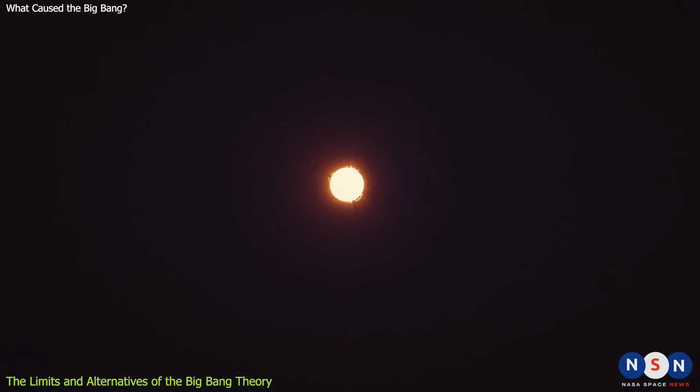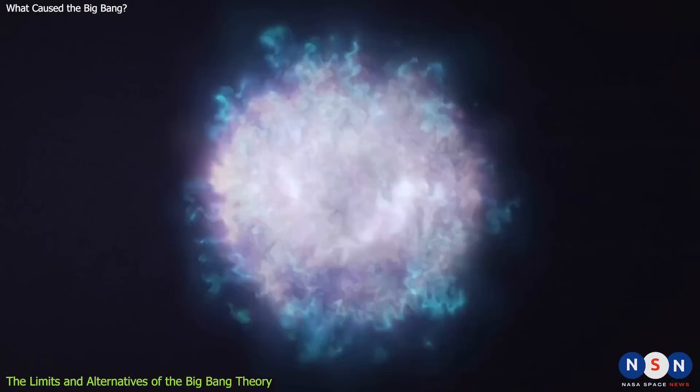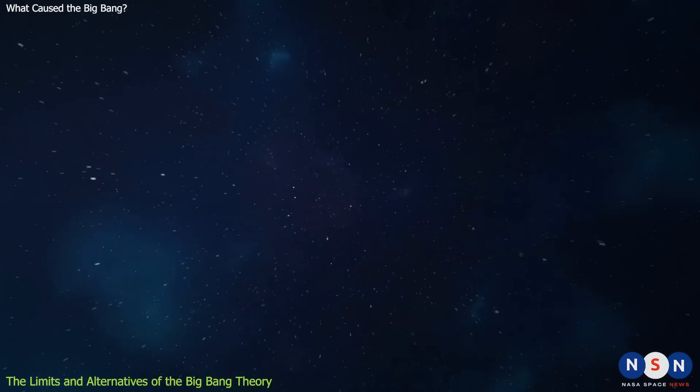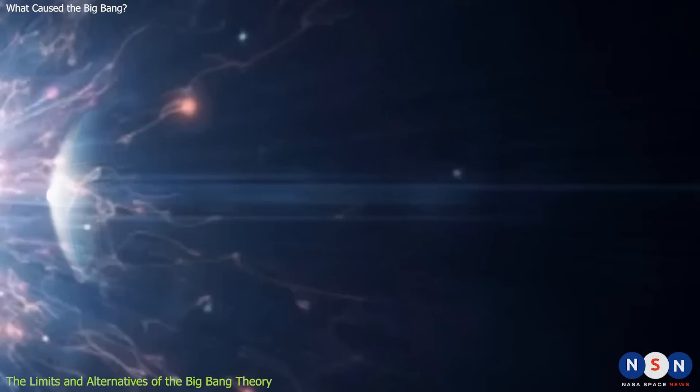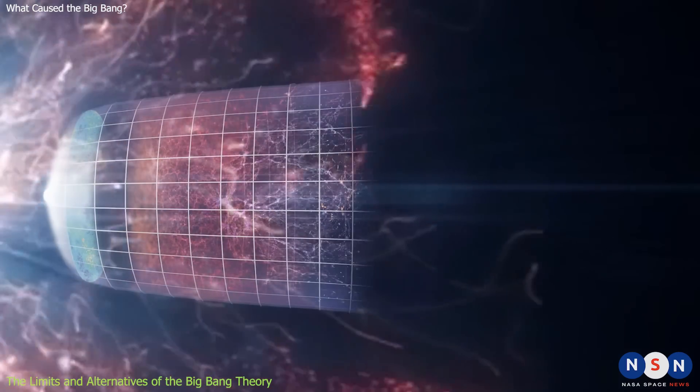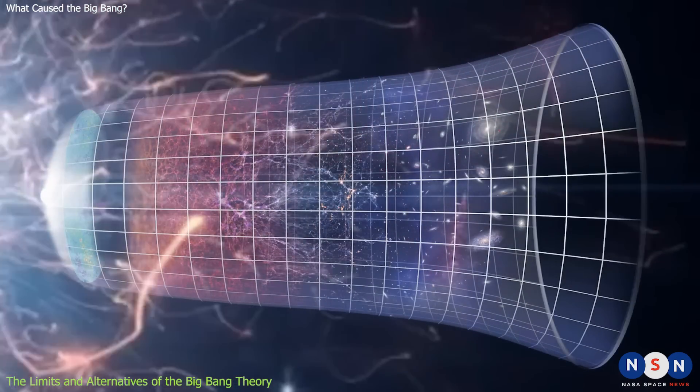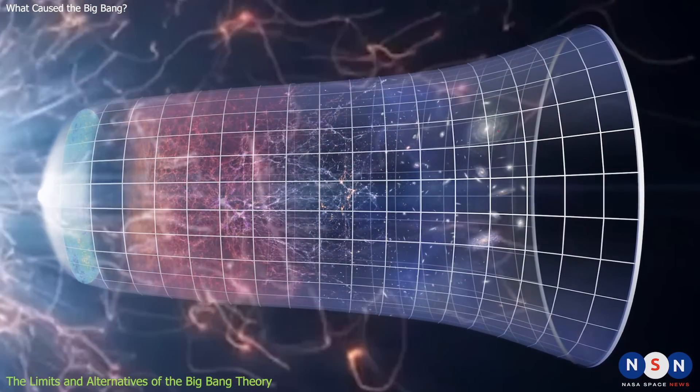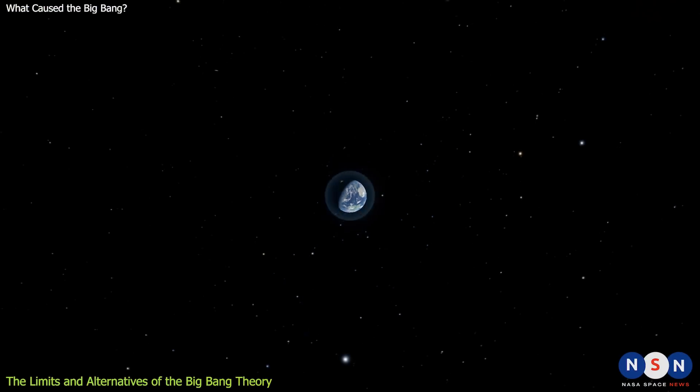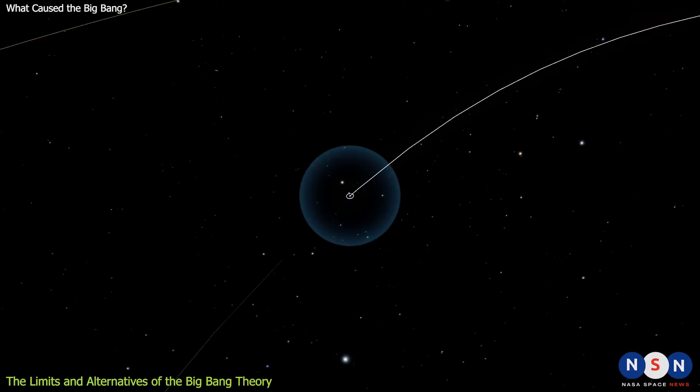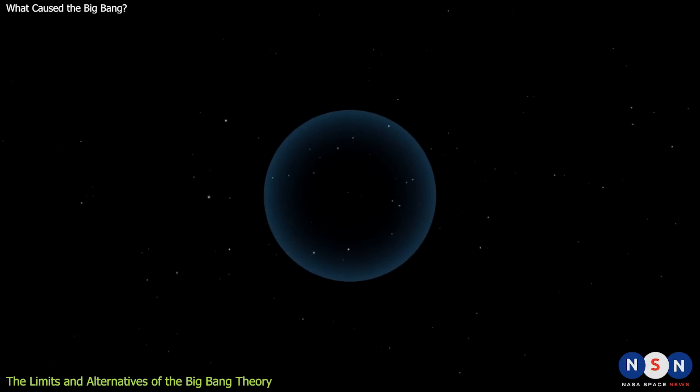For example, it does not explain what caused the Big Bang itself, or what happened before or during the first fraction of a second of the universe's existence. It also does not explain why the universe has the properties and parameters that it has, such as its shape, size, density, and rate of expansion. These are known as the initial conditions of the universe, and they seem to be finely tuned to allow for life and complexity to emerge.